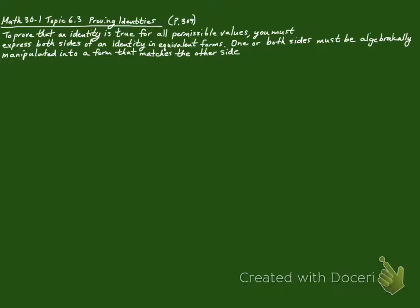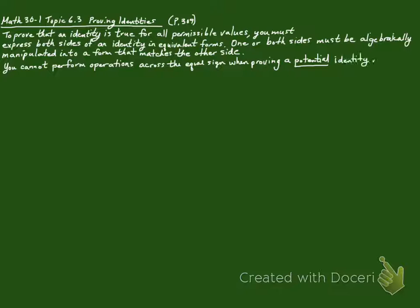Math 30-1, Topic 6.3: Proving Identities. This is from page 309 of the textbook. To prove that an identity is true for all permissible values, you must express both sides of an identity in equivalent forms. One or both sides must be algebraically manipulated into a form that matches the other side. You cannot perform operations across the equal sign when proving a potential identity. You must simplify the expression on each side of the equation independently.